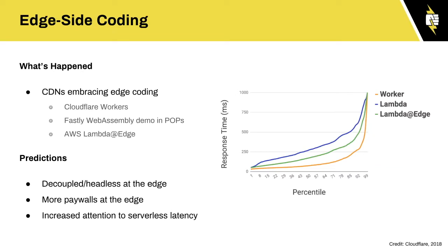Edge-side coding at CDNs is happening much more in the past year. Instead of deploying serverless functions only on Lambda or Google Cloud Functions, this deploys code in all the POPs around the world so that when a request hits the local POP, some functionality can run right there without going back to an origin. The biggest deployment of this is Cloudflare Workers. AWS launched Lambda at Edge, and Fastly has an experimental web assembly container for running this as well.